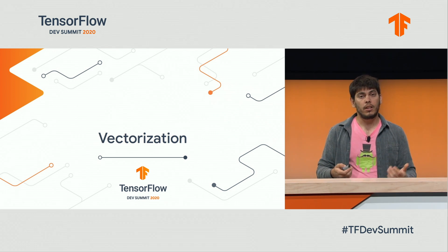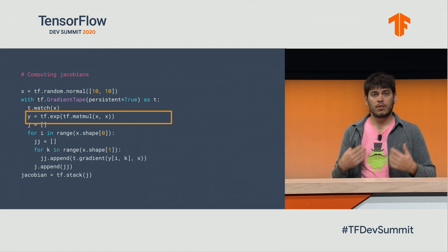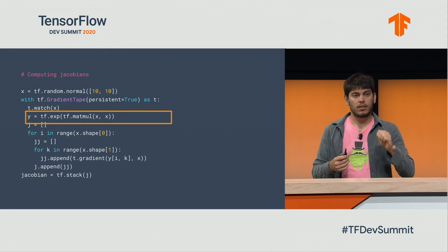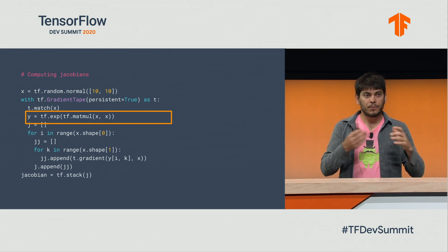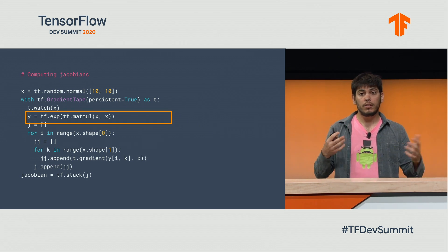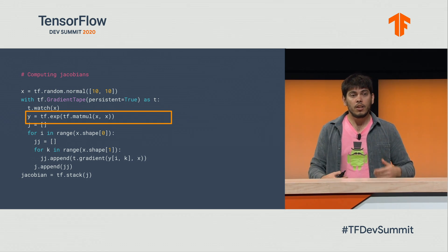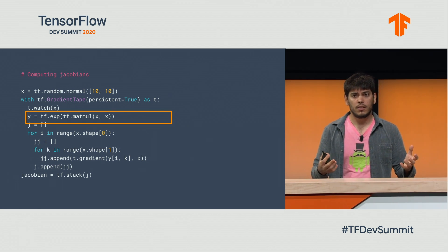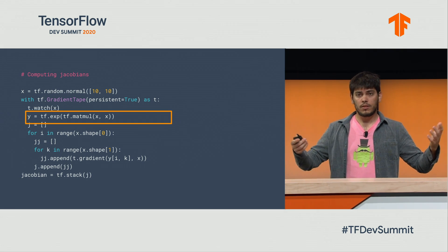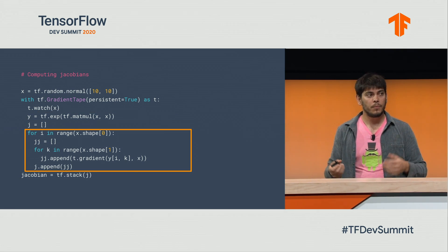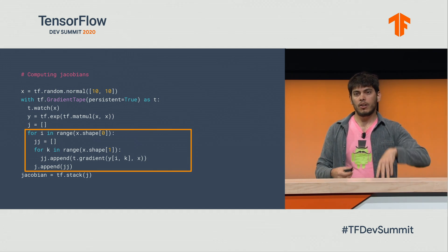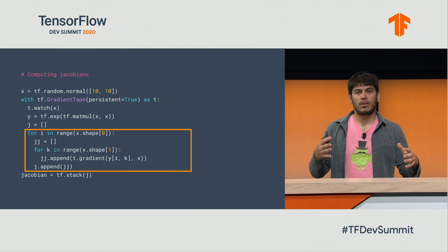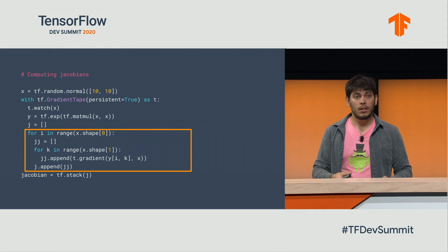The working example I'm going to use here is Jacobians. If you're familiar with TensorFlow's gradient tape, you know that tape.gradient computes a gradient of a scalar, not a gradient of a vector-valued or matrix-valued function. If you want a Jacobian of a vector-valued function, you can call tape.gradient many times. Here I have a very simple function — the exponential of the square of a matrix — and I compute the Jacobian by writing a double for loop: for every row, for every column, compute the gradient with respect to that output, and stack the results to get the higher-order Jacobian tensor. This has always worked.